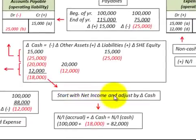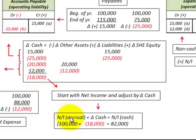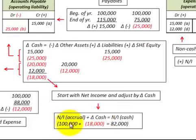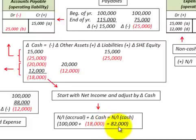We start with net income and adjust it by the total change in cash from changes in liabilities and other assets (inventory). For example, with $100,000 of accrual net income, adding the cash change of minus $18,000 gives us net income on the cash basis of $82,000.